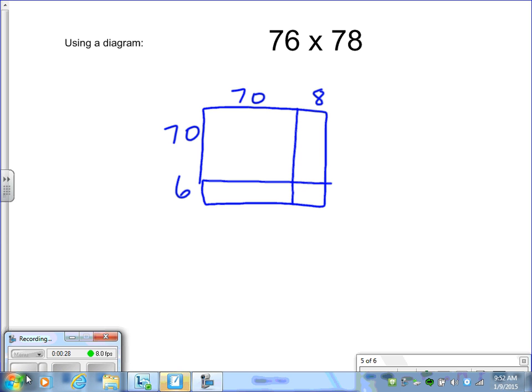Then perform your multiplication, your mental math. 70 times 70, 7 times 7 is 49, but we have two zeros we have to annex. So 70 times 70 is 4,900.